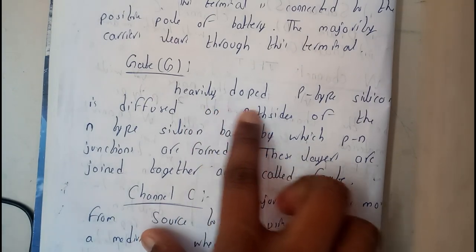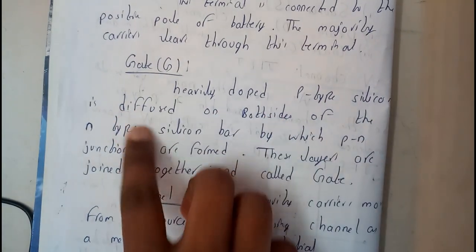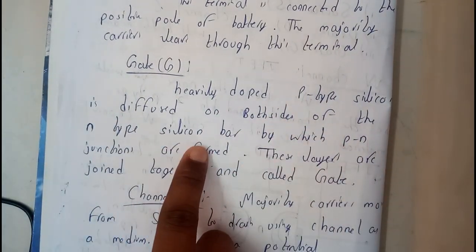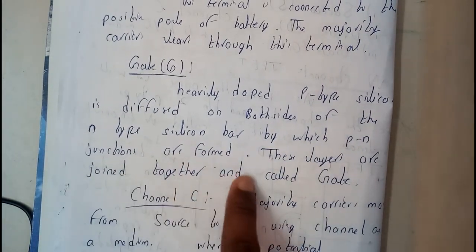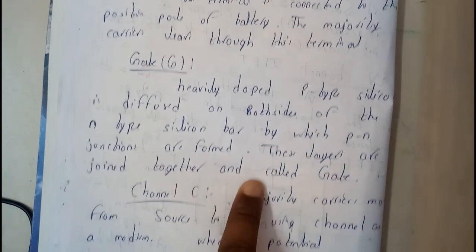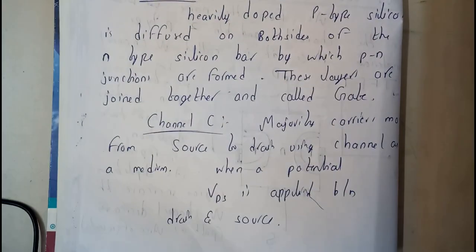Gate: heavily doped P-type silicon is diffused on both sides of the n-type silicon bar, by which PN junctions are formed. These layers are joined together and are also called as gate.